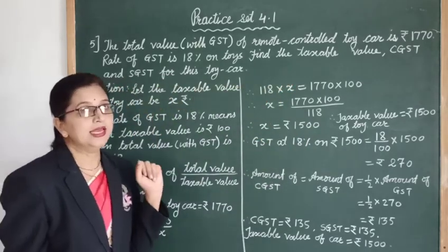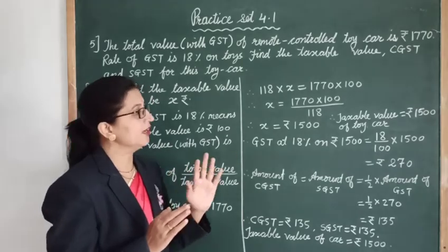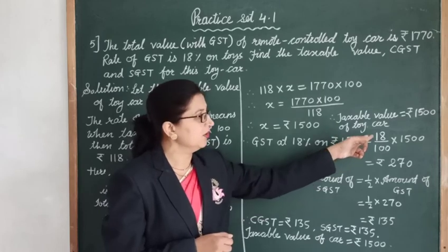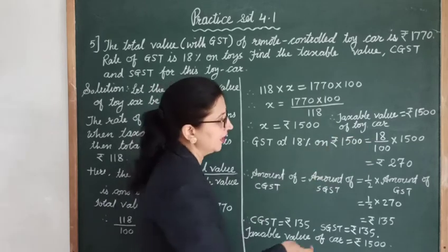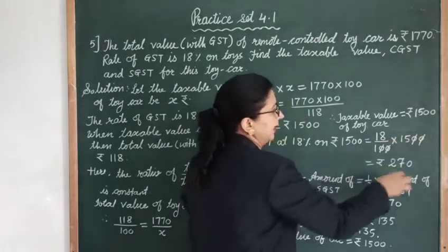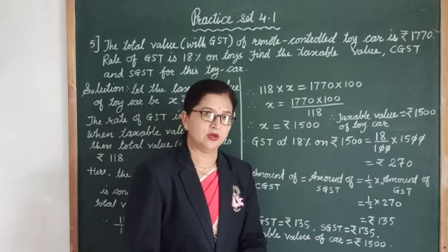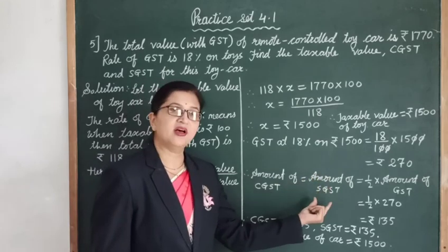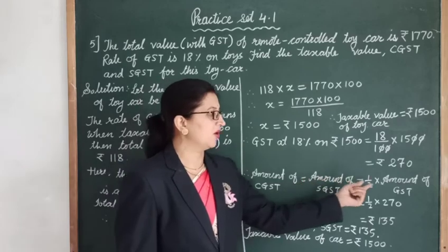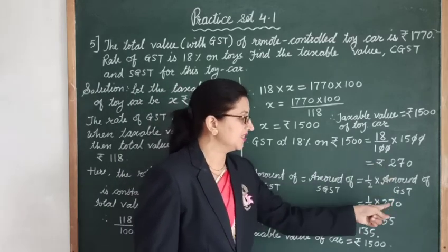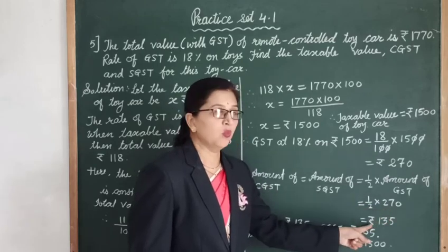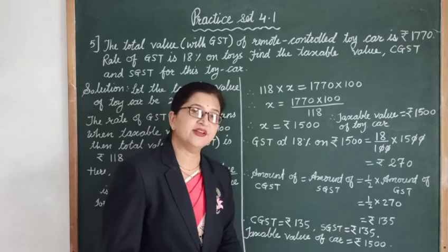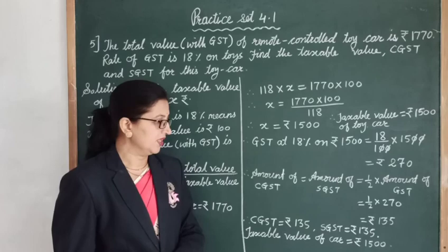Now we find CGST and SGST. GST at 18% on 1500 rupees equals 18/100 × 1500, which gives 270 rupees. Since CGST equals SGST and both are half of GST, half of 270 is 135. So CGST is 135 rupees, SGST is 135 rupees, and the taxable value of the car is 1500 rupees.